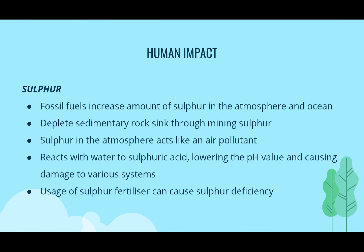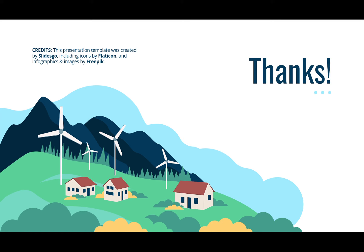The human impact on sulfur includes fossil fuels increasing the amount of sulfur in the atmosphere and oceans, and depleting sedimentary rock through mining. Sulfur in the atmosphere acts as an air pollutant — harmful not only to the marine ecosystem but also to the gaseous ecosystem. It reacts with water to form sulfuric acid, lowering the pH and causing damage to various systems; sulfuric acid is also the component of acid rain. Excessive use of sulfur as fertilizer can also cause deficiency of naturally occurring sulfur.